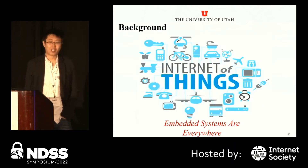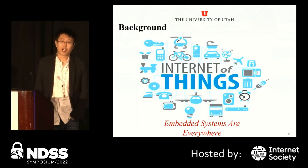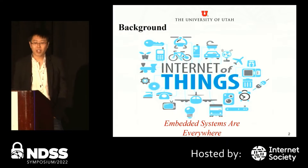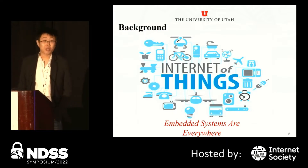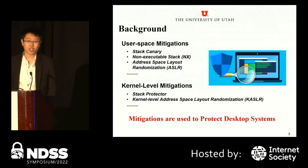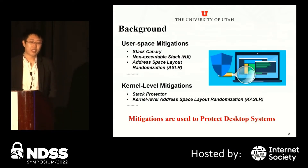Embedded devices are running everywhere to connect the physical world with the digital world. By estimation, there are more than 35 billion embedded systems installed in the wild. The large-scale deployment makes the security of embedded systems critical. Many mitigations are used to protect the desktop system from different kinds of attacks. These memory-related mitigations include both user space and Linux kernel level.